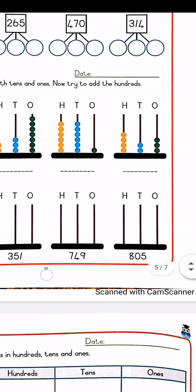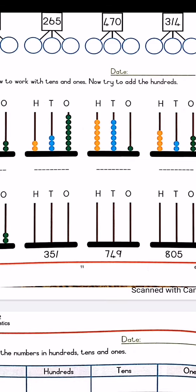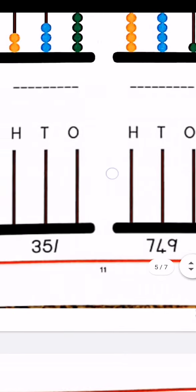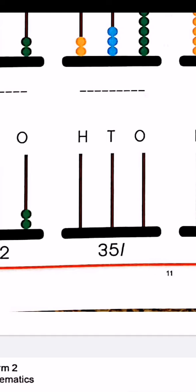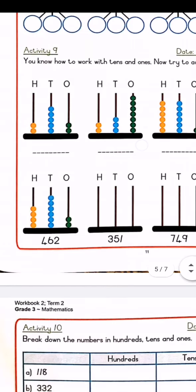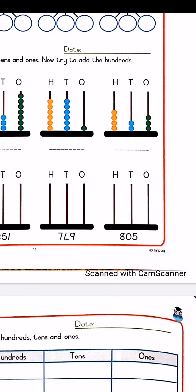Then the last 3, they give you the number at the bottom and you have to draw the beads. So for the first number, it's 351. So you're going to take your orange for the 100. The first number, the 3, is your 100s. So you must draw 3 orange beads. So by the H for 100, you're going to draw 3 orange beads. Then your 10s, you're going to use your blue. The number in the middle, the 5, is your 10s. That stands for 50. So you must make 5 blue beads. And then your 1s is the last number. And that is 1. So you only draw 1 green bead. And then you do the same for 749 and 805.